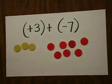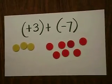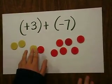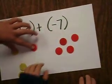Then, when adding, you need to make pairs and balance it out, which is called zero pairs. It's one positive tile and one negative tile. So that's 1, that's 2, and that's 3.